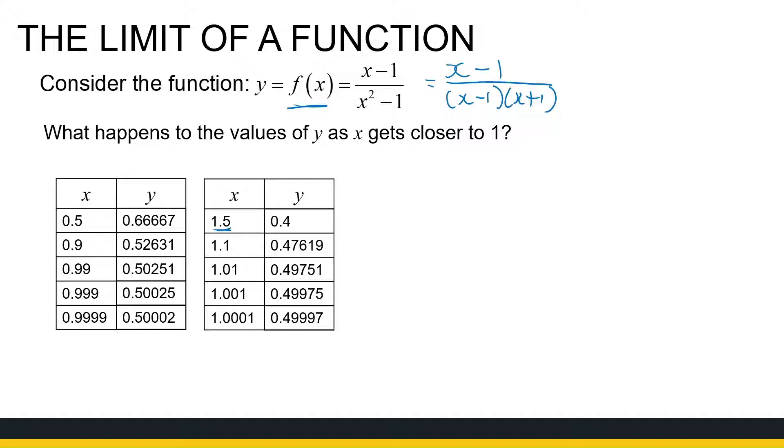So if we just look at what's happening here, as x gets closer and closer to the value 1 from the negative side, meaning from values smaller than 1, my y value seems to be approaching 0.5. Similarly, as x gets closer and closer to 1 from values bigger than 1, yet again, my y value seems to be approaching 0.5.